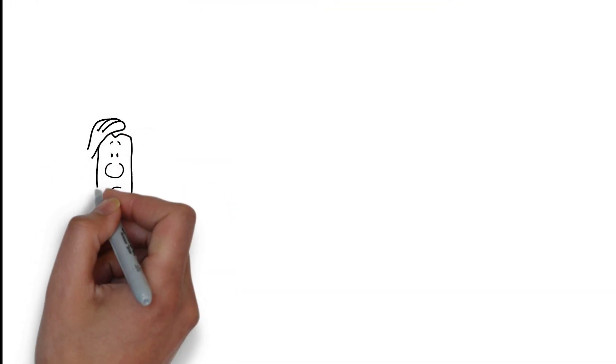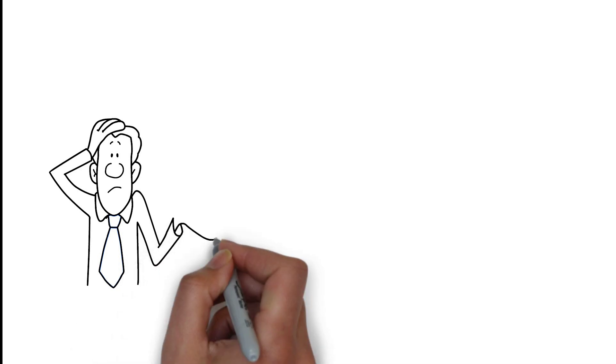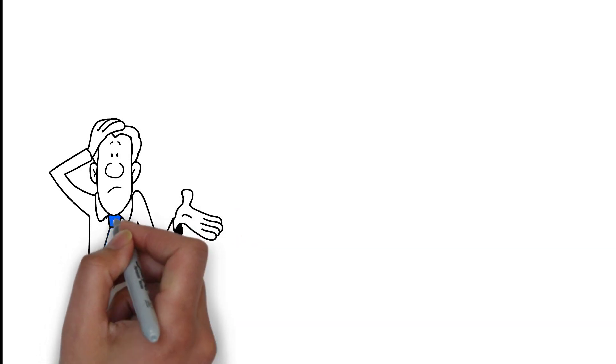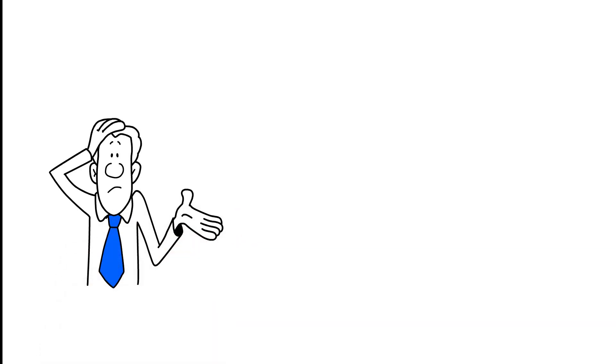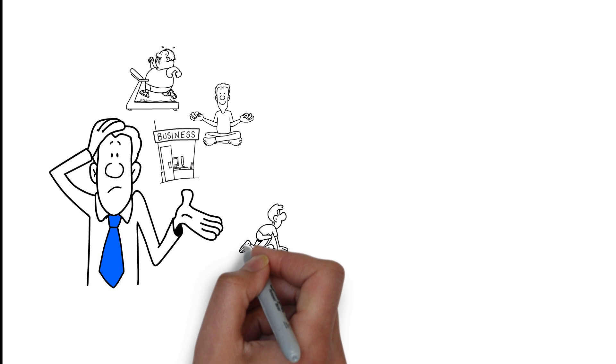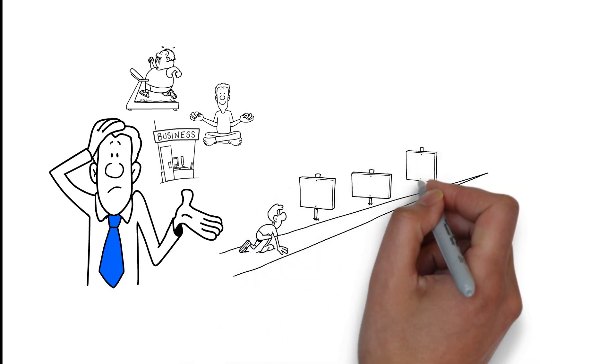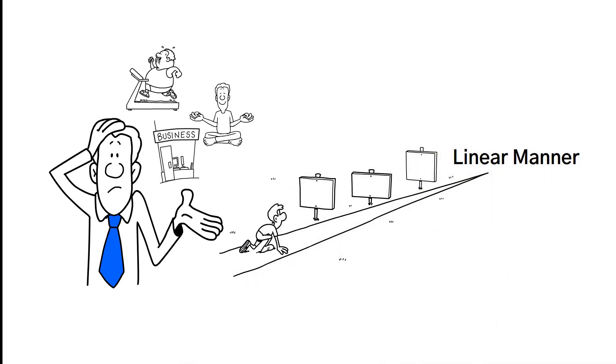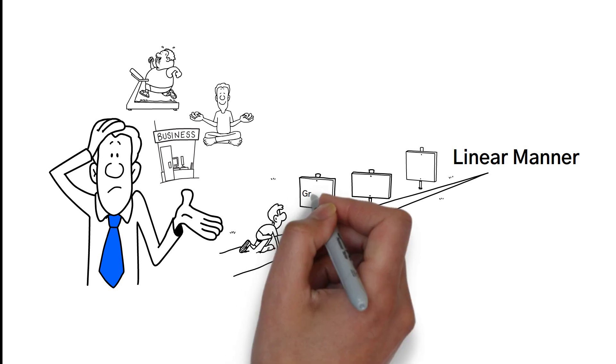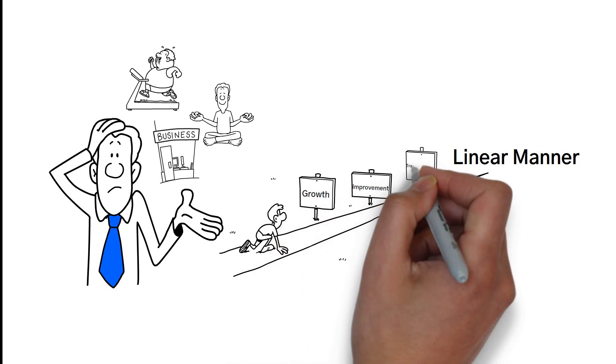Number two, the valley of disappointment. Turns out that every single person trying to make a change goes through something called the valley of disappointment. Whether you're trying to go to the gym, trying to build a meditation practice, building your business. As humans we embark upon a new journey for self-improvement with the expectation that our results are going to grow in a linear manner. So we put in all our efforts and hope to see visible progress in terms of growth, improvement, or transformation.